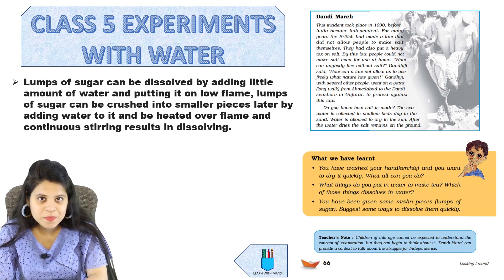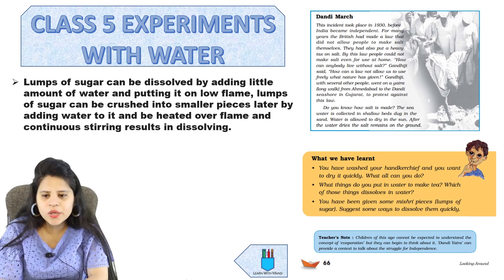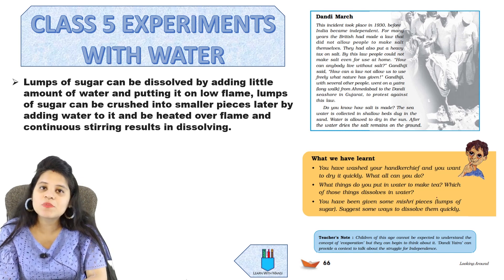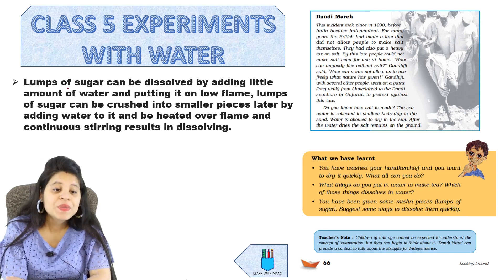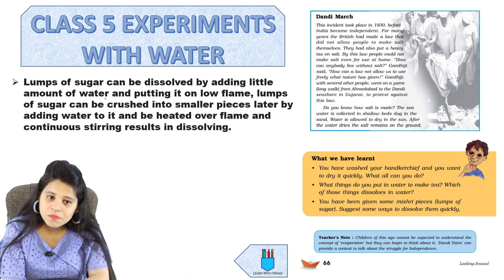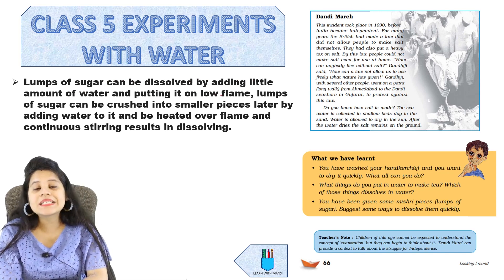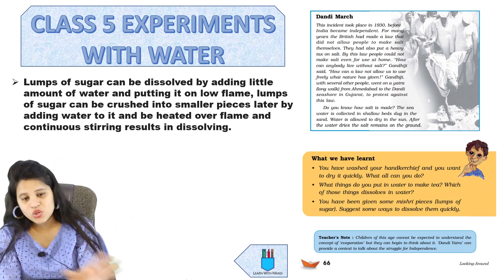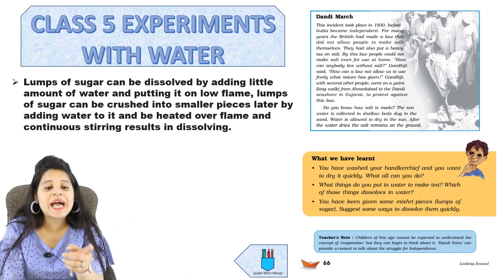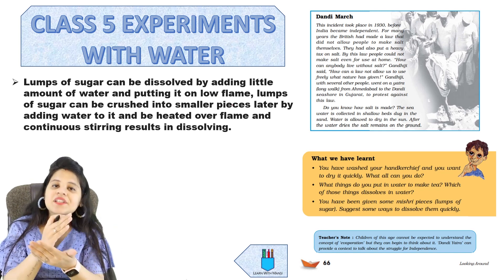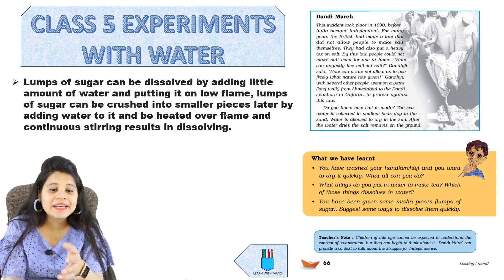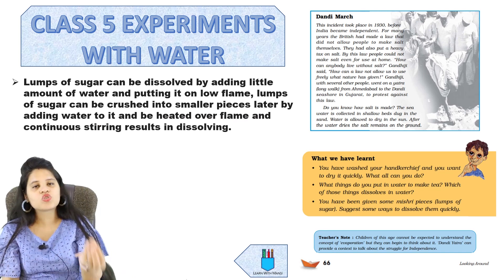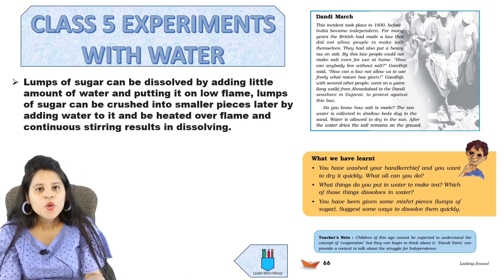You have been given some Mishri pieces — lumps of sugar. Suggest some ways to dissolve them quickly. Lumps of sugar can be dissolved by adding a little amount of water and putting it on a low flame. Or the lumps of sugar can be crushed into smaller pieces, then water added to it, heated over a flame, and continuously stirred until dissolved.